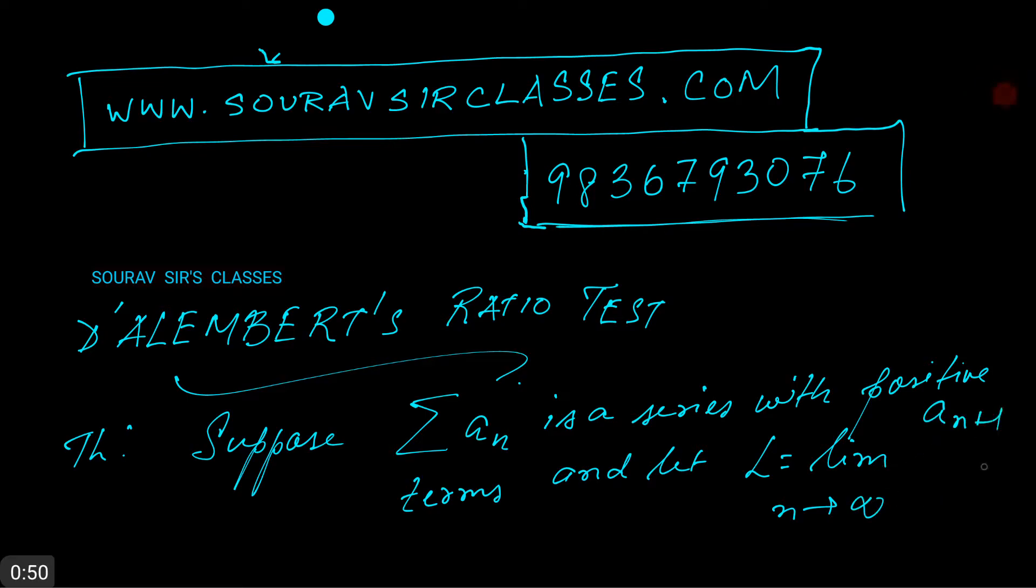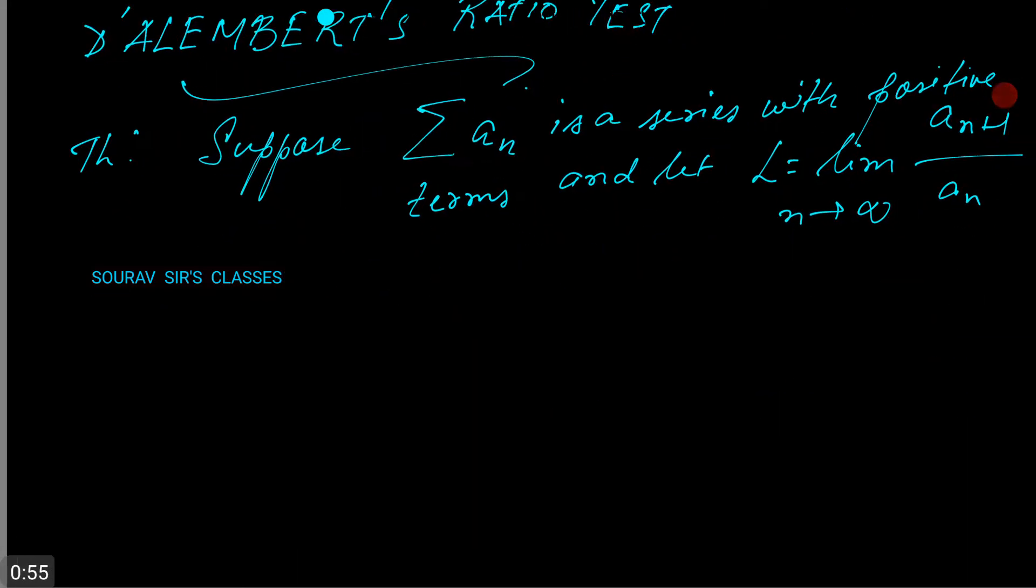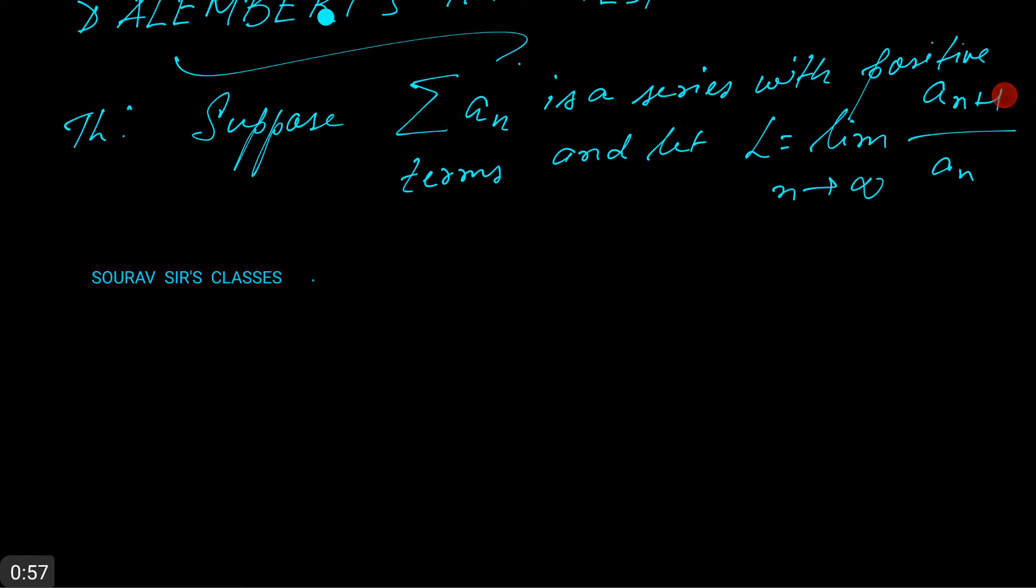Now postulate number one: if L is less than one, then sigma a_n converges.